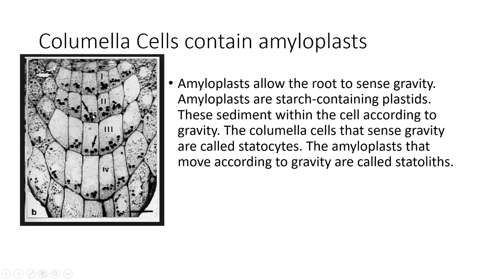Just some terminology: this black round circle is called a statolith. What happens is the root is facing this way — so it's facing downwards — and the statoliths accumulate on the bottom of the cell. This is what allows the plant to detect gravity.